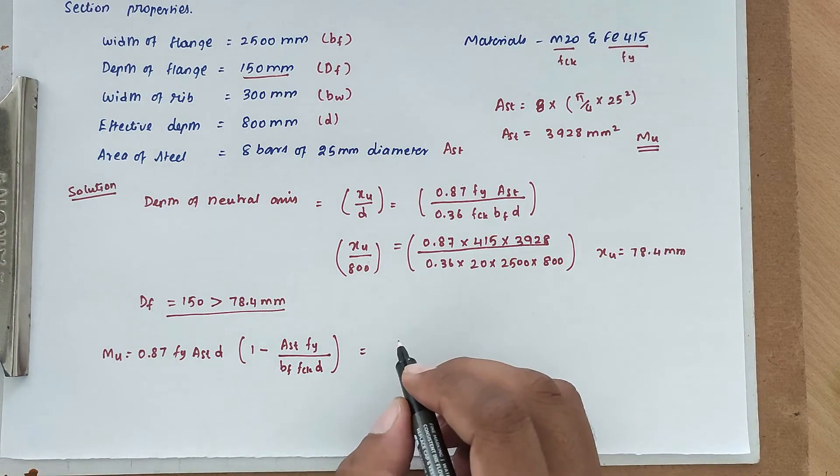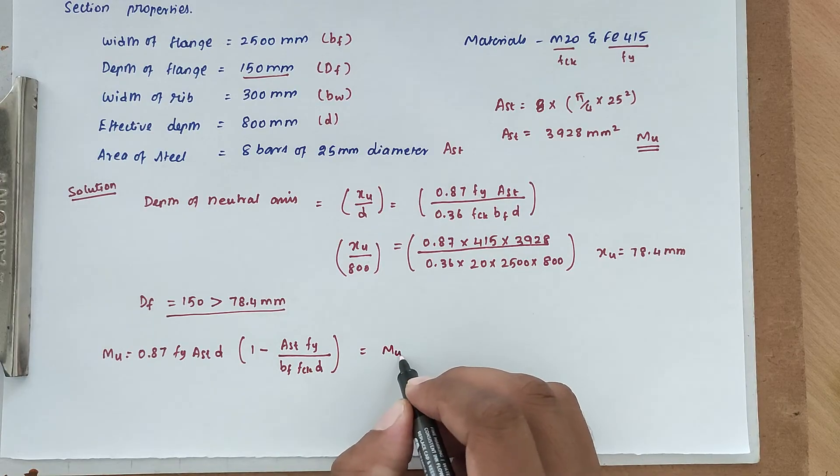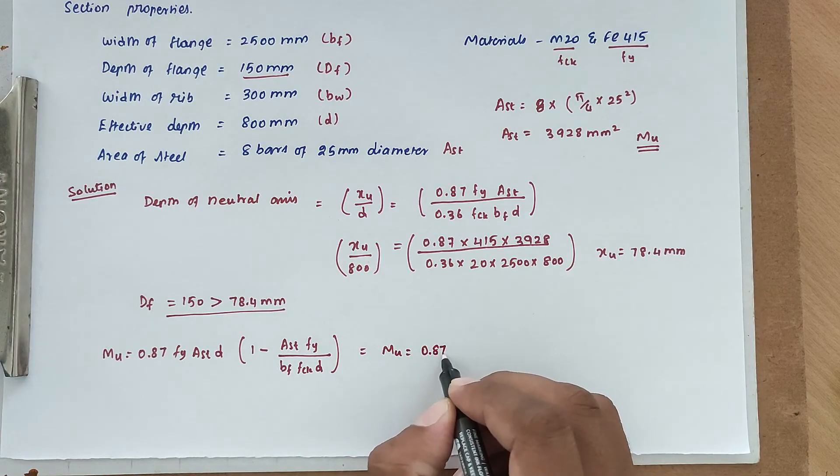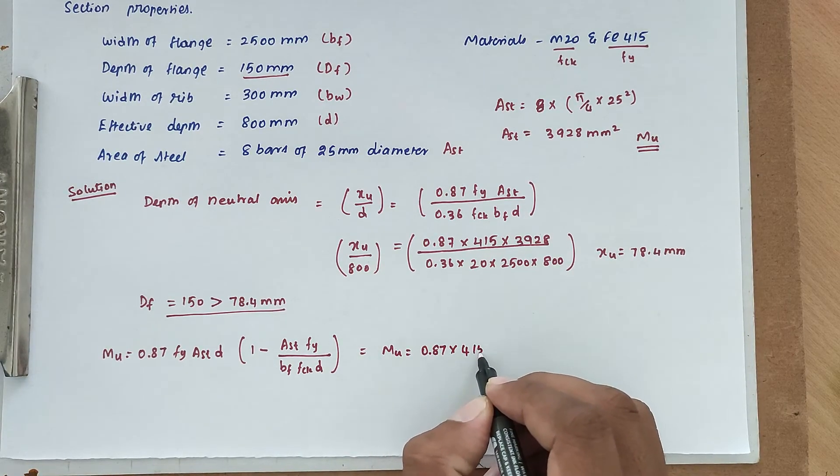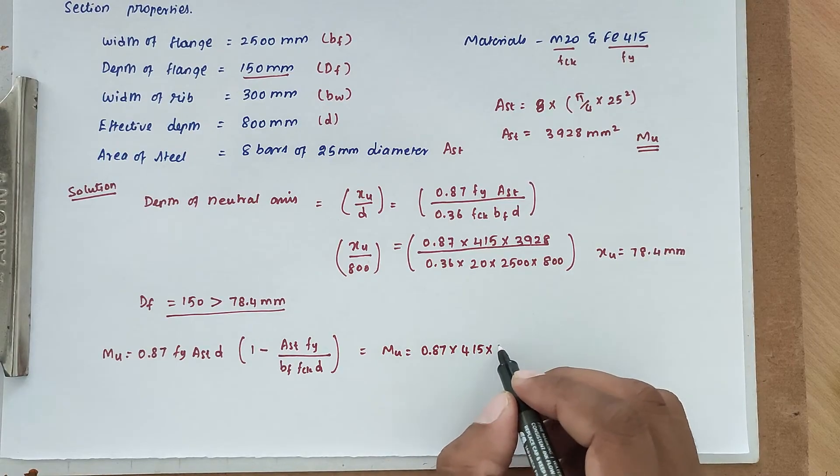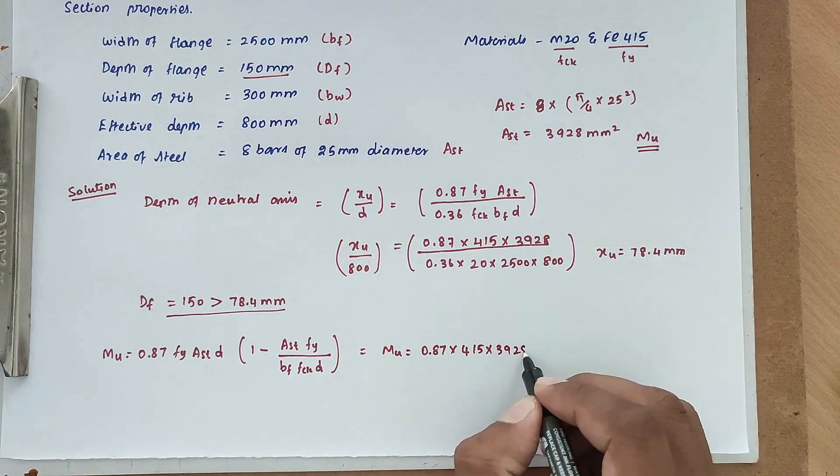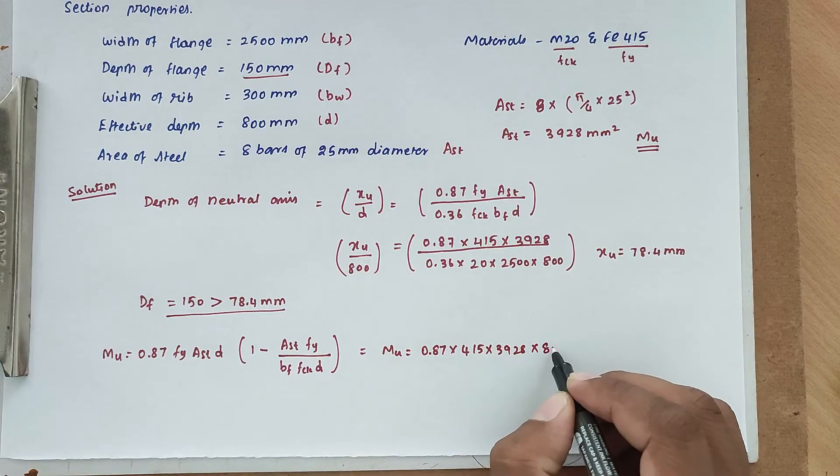We can substitute all the values. MU equal to 0.87 into FY value 415 into AST value 3928 into D value 800.